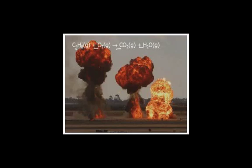Now we're going to look up values in our table. C₃H₈, which is propane gas, is negative 104 kilojoules per mole. What about oxygen? You don't even have to look that up — it's zero because oxygen is in its elemental standard state. So five times zero is just zero; you can ignore that coefficient.